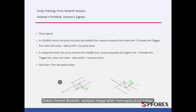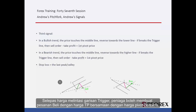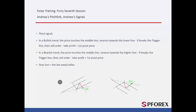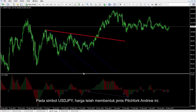In a bearish format, after the price has reached the third pivot, it will decrease but it will not cross or touch the first pivot line. So it will change its direction towards the top again. After the price crosses the trigger line, a trader can place a buy order with TP price equal to the first pivot price. SL price is between the breakout point and the last valley.